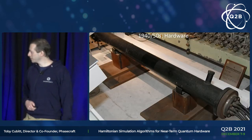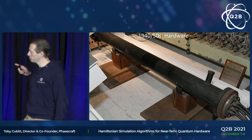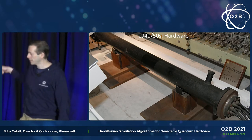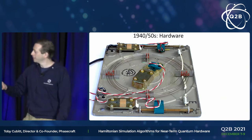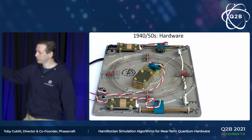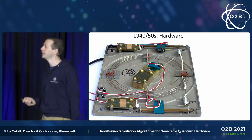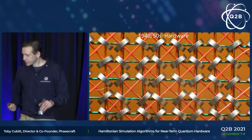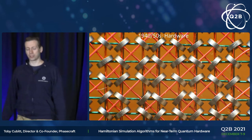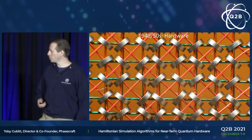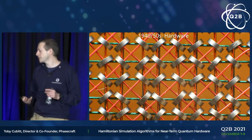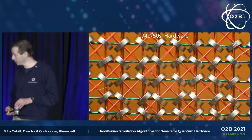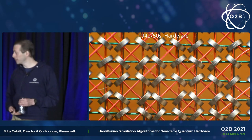For example, memory used to look like this, where you had waves traveling down a pool of mercury and then coming to the end and being cycled back to keep the bits alive. Or a big improvement on this: magnetostrictive memory, where torsion waves traveled down a coil of wire. This is how we stored information back in the day. Or drum memory or core memory — all of these disparate technologies that are now completely obsoleted.